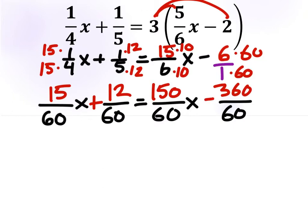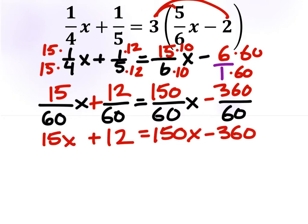So here is our new equation, all with common denominators. So what we can do is rewrite this problem without any denominators, and we get 15x plus 12 equals 150x minus 360.